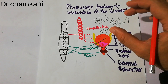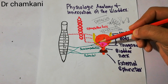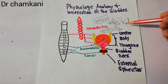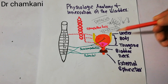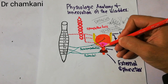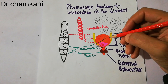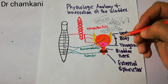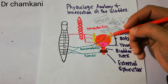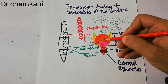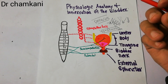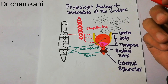The neck of the bladder is funnel-shaped, going down inferiorly and anteriorly. This neck also contains the internal sphincter. The internal sphincter basically protects the flow of urine from the bladder towards the urethra, and it keeps the neck of the bladder closed.